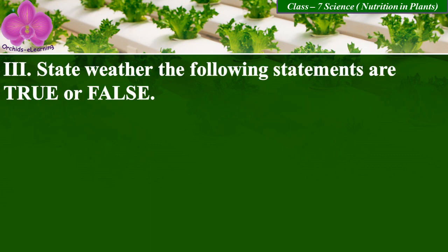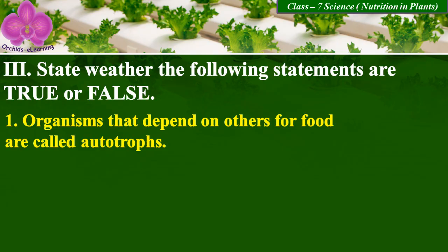Next question: state whether the following statements are true or false. First — organisms that depend on others for food are called autotrophs. False.